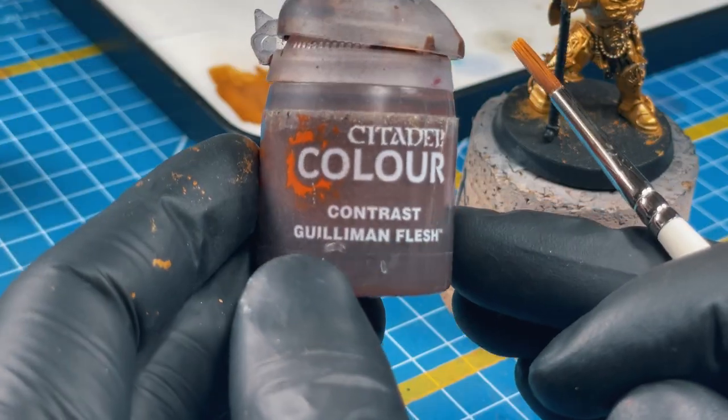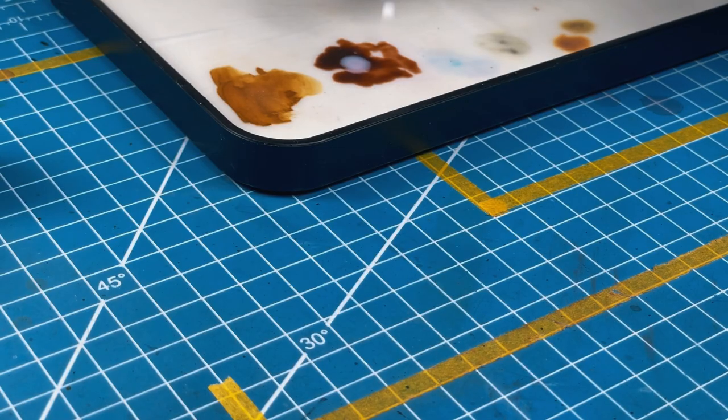Base coat ready, now it's time for washing. Grab your Guilliman Flesh and add a few drops of medium, and using this mix, cover the whole miniature.